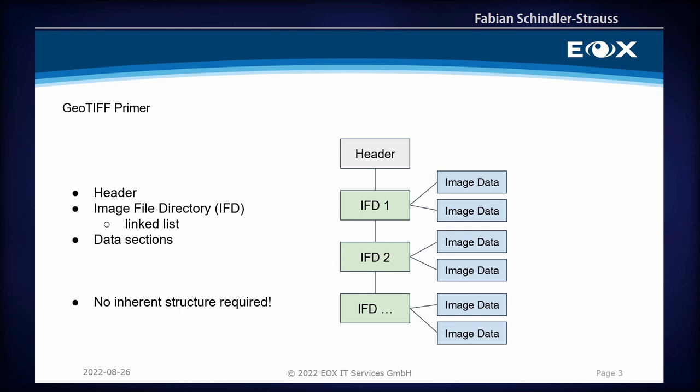First, there is a thing called the header, which is basically the first part of your GeoTIFF, and then there's a linked list of all the IFDs of the image. Since a GeoTIFF can be comprised of many images, they are all organized in so-called IFDs. They store the metadata for the particular image and have references for the image data. There is no actual inherent structure required. For those with a computer science background, linked lists are basically the worst performance structure there is.